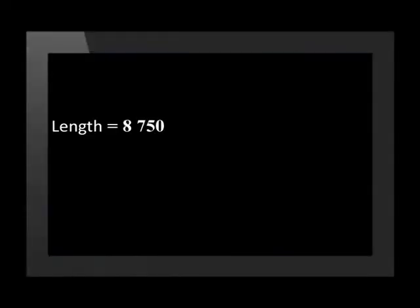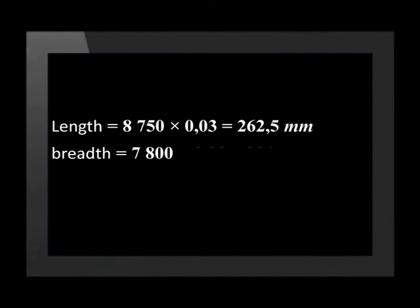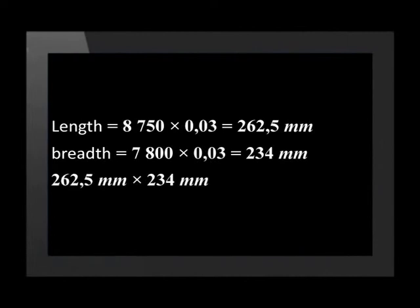Now that we have both possible scale factors, we need to choose one. We should always choose the bigger one and in this case, it's 0.03. Now we multiply the length of the classroom by 0.03 to get 262.5 millimeters. The breadth is multiplied by 0.03 to give you 234 millimeters. This means that the dimensions we will draw the classroom with are 262.5 millimeters by 234 millimeters.